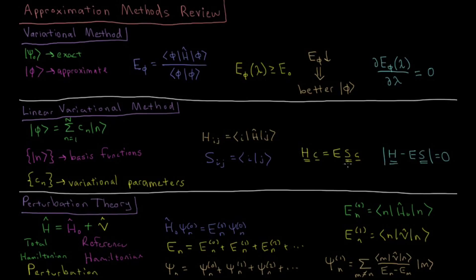And this is actually the Schrödinger equation expressed in matrix form. And this has its solution for the lowest energy coefficient vector and for the energies when the determinant of the Hamiltonian matrix minus the energy times the overlap matrix equals zero.